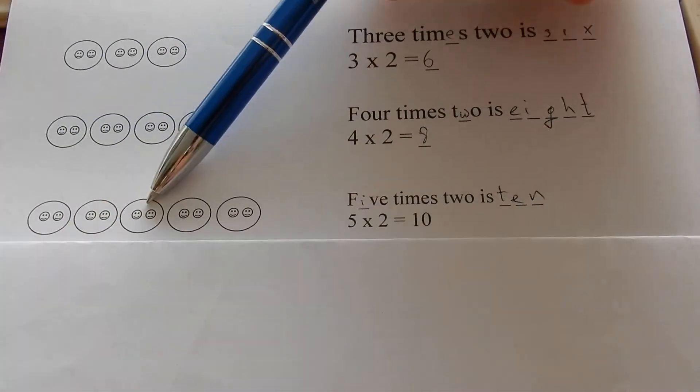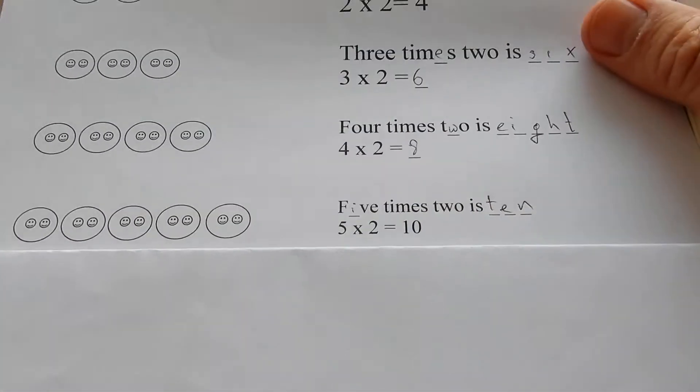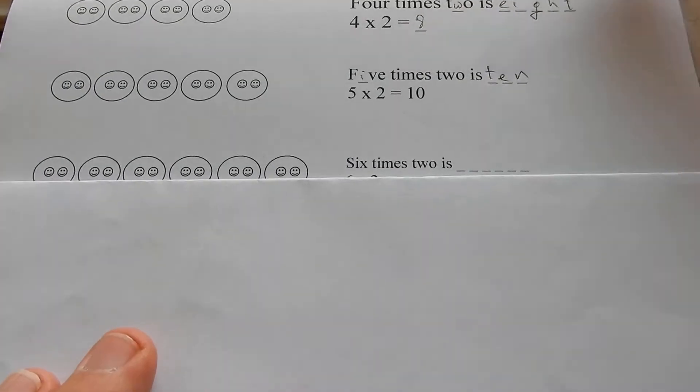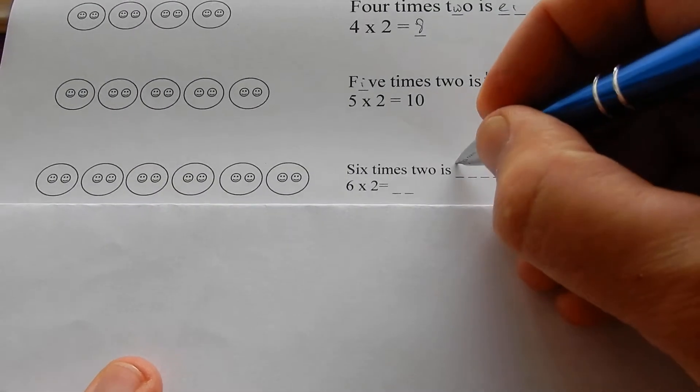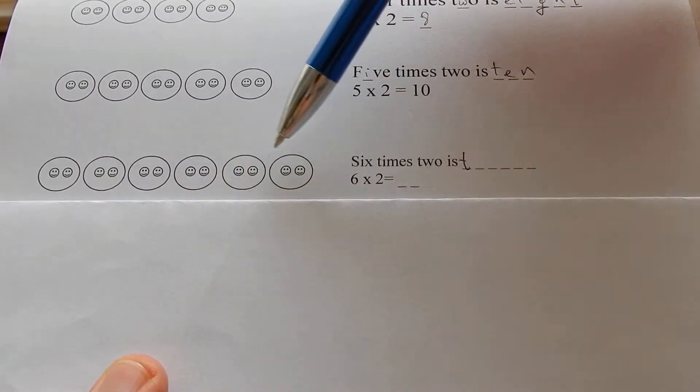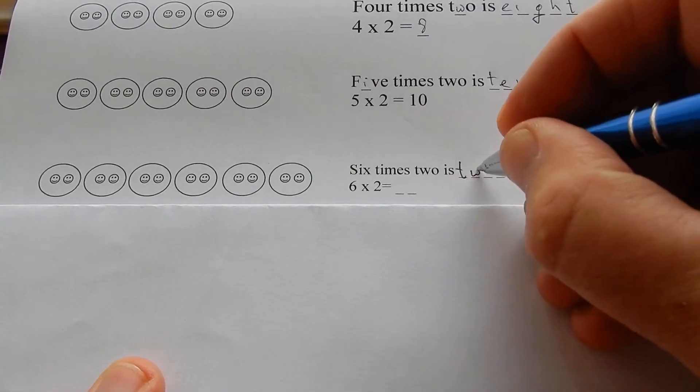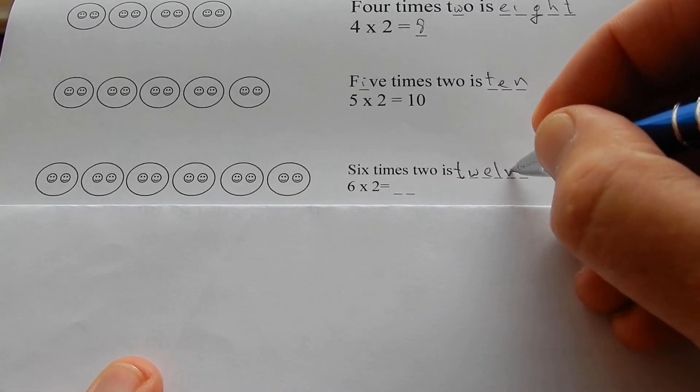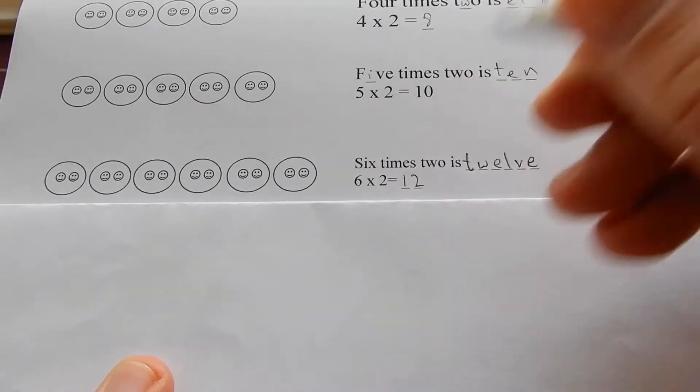Two, four, six, eight, ten. Six times two is two, four, six, eight, ten, twelve. Doing the even numbers. Six times two is twelve.